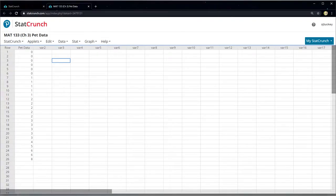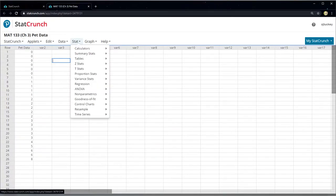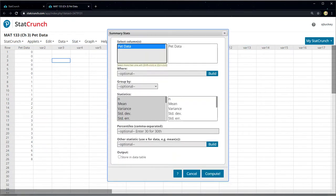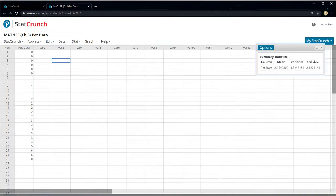And StatCrunch, of course. If I have my pet data right here, I go to Stat, Summary Stat, Column, and I click on Column. I say I want my pet data, and then I want you to find the mean. The nice thing about StatCrunch is it'll actually find the variance and the standard deviation, so you don't have any extra work to do.